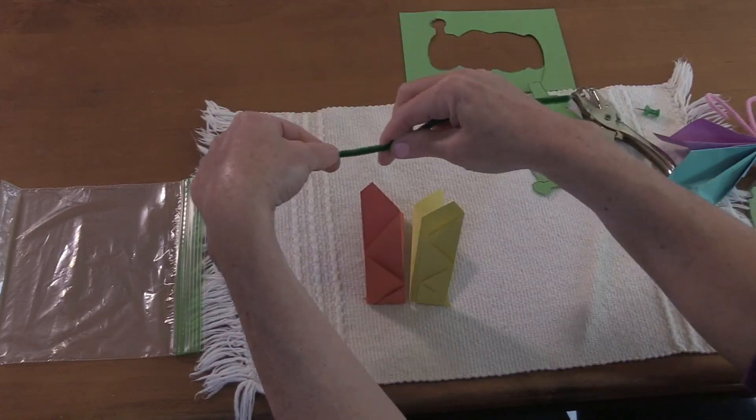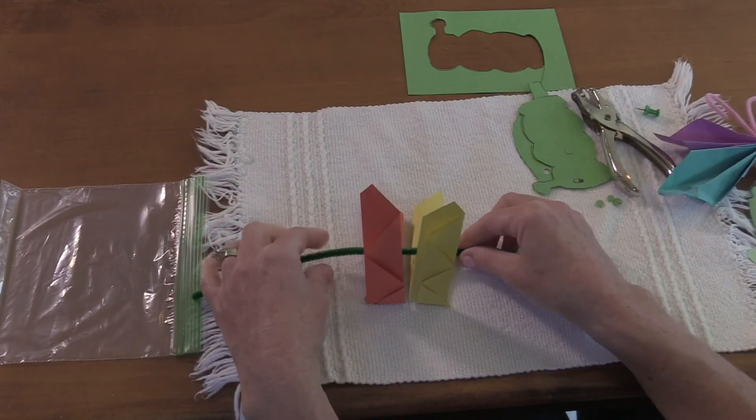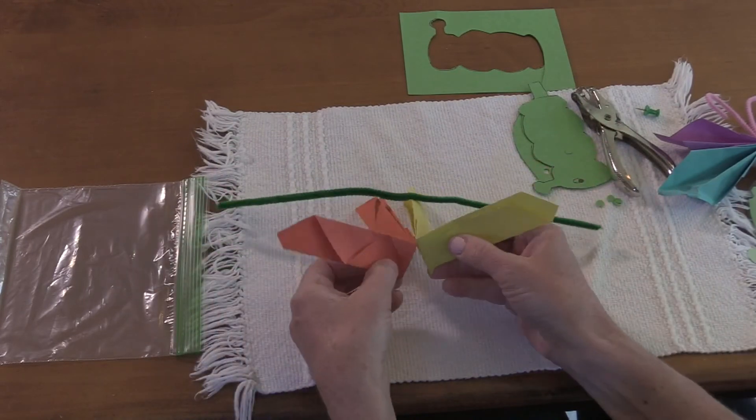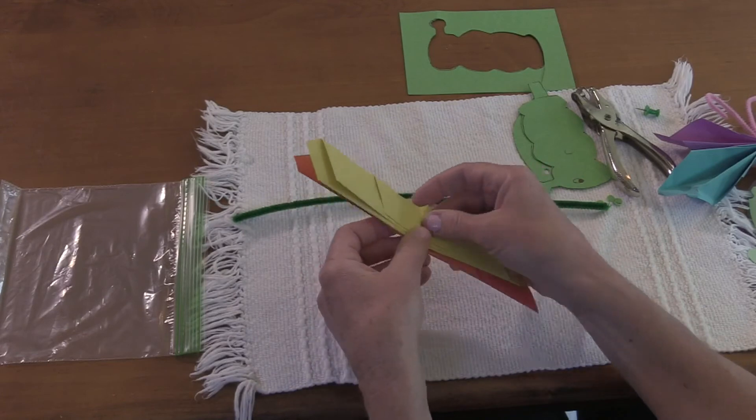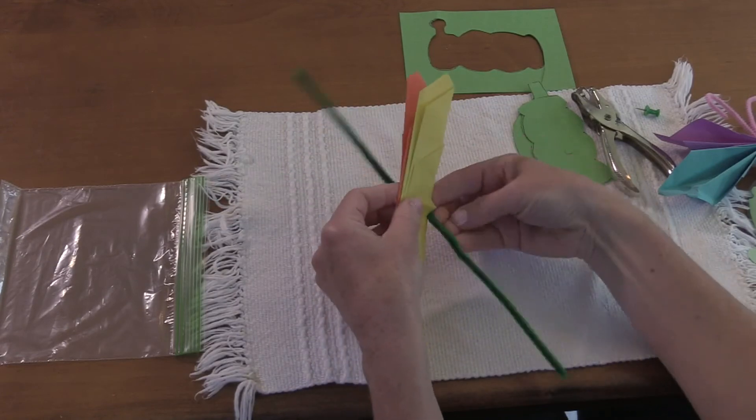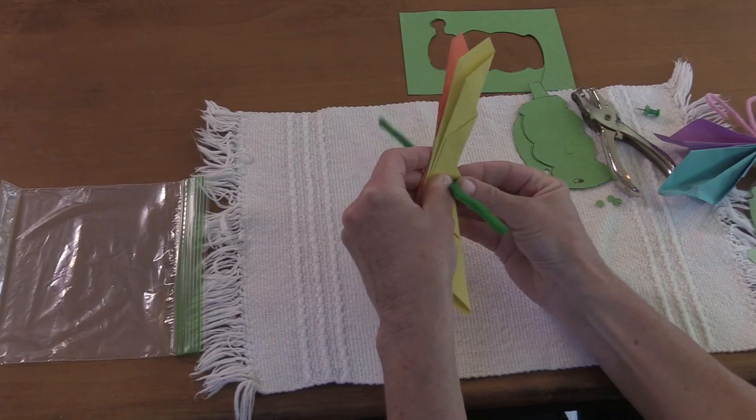Now I'm going to take my pipe cleaner, wrap the pipe cleaner and straighten it out. Wrap the pipe cleaner around the wings.